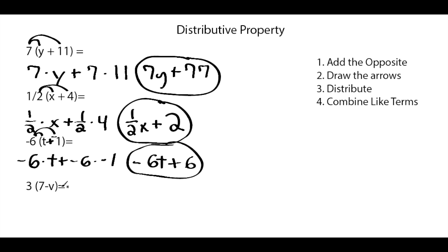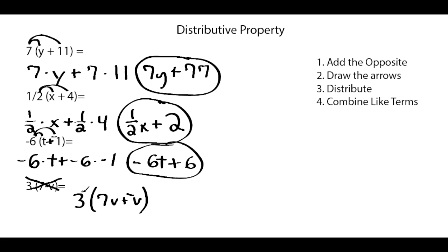For this last one, I'm going to change it up to show an example where you have to combine like terms. We're going to work with 3 times the quantity 7v minus v. First thing, add the opposite — since we do have subtraction on the inside, we change subtraction to addition, and the opposite of positive v is negative v. Step 2, draw our arrows: 3 times 7v and 3 times negative v. So we have 3 times 7v, bring down our plus sign, and then 3 times negative v.